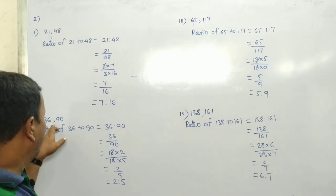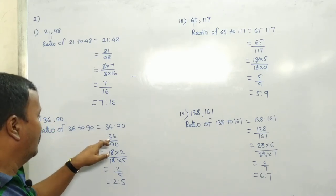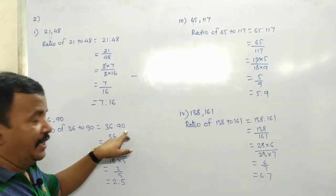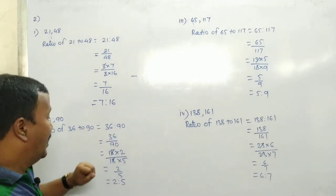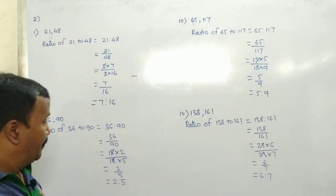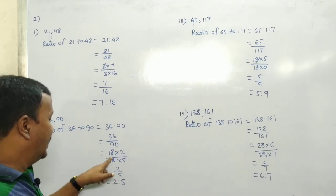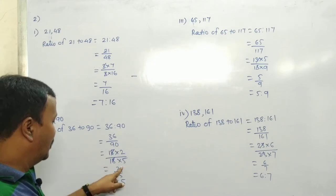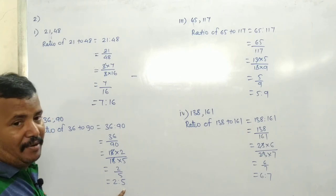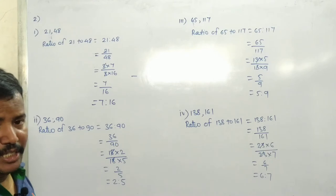Second is 36 and 90. Ratio of 36 to 90 equals 36 divided by 90. 18 times 2 is 36, 18 times 5 is 90. 18, 18 cancel. 2 upon 5, answer is 2 ratio 5. Understood everyone?